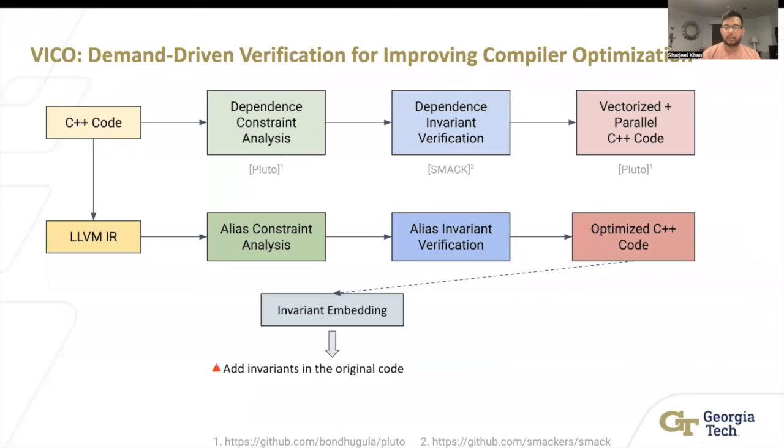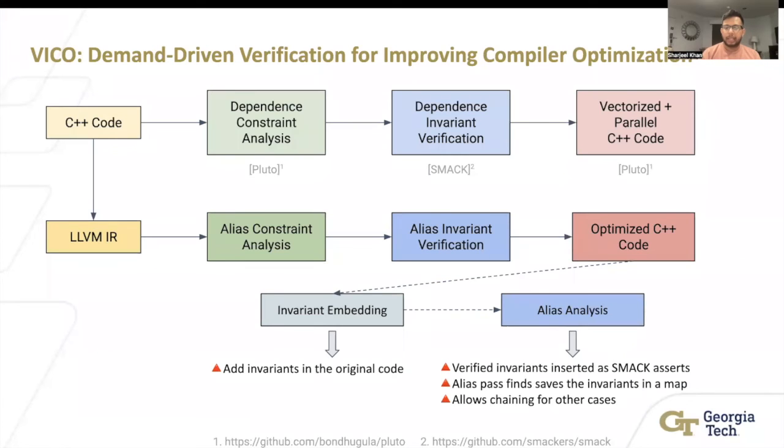So now we have our invariant. We're going to put it back in the code basically. And then we create our own alias analysis pass, which takes the information from the SMACK asserts and saves them in a map. So if you give us these two variables, we can tell you if it's a must alias or no alias. And if you give some other variable, the cool thing with LLVM is that we can chain other alias analysis and we can just pass the information to the other analysis. And it can give you the output of if it's a must alias or may alias or no alias.